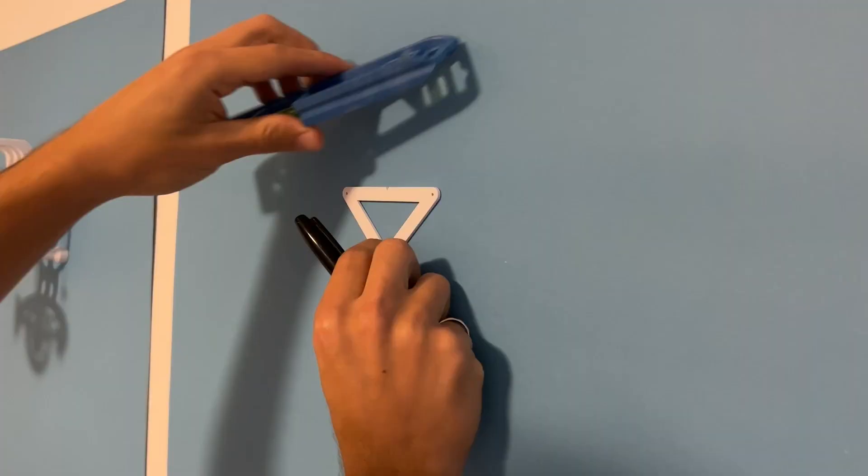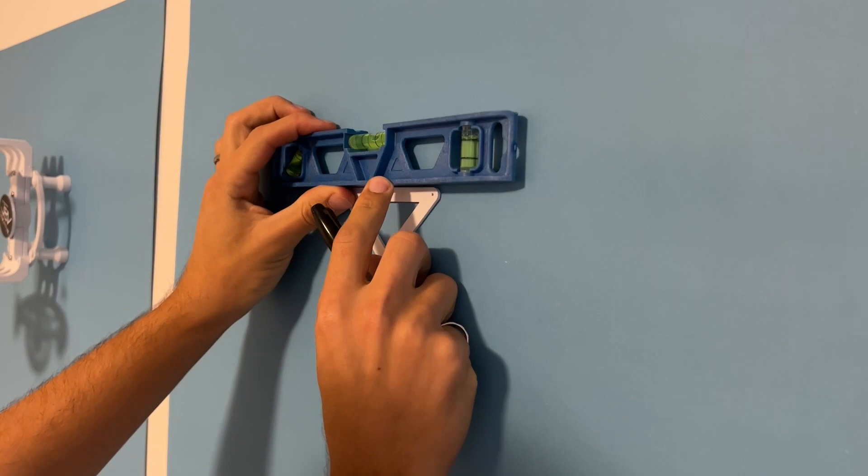Use a level to make sure that your wall mount guide is straight and mark the holes with pen or a marker.